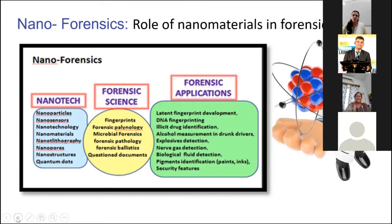I would also like to share that one of our research papers — with a few research scholars — on chitosan-based SPR development of latent fingerprints has been accepted. There is also a book chapter going to be published by De Gruyter's publication — a review paper on nanophosphorus emerging materials in forensic science. This drove me into doing much more research in this area, although I am still in very preliminary stages, and I look forward to collaborating with big names who have good experience in nanotechnology.